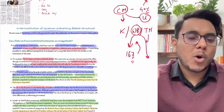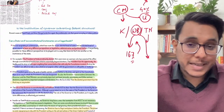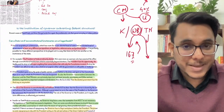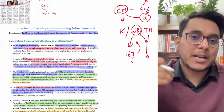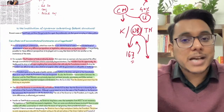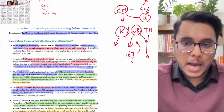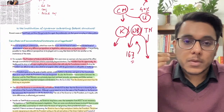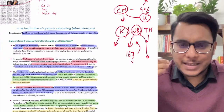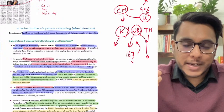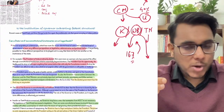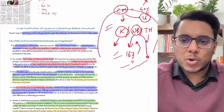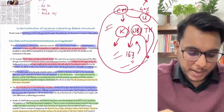In Kerala, there is a controversy over the Chancellor's role. The Governor is the Chancellor of state universities and can appoint Vice Chancellors. One Vice Chancellor was appointed in Kannur University, but then the Governor said the appointment happened because of political pressure. Such controversies are ongoing. Every controversy does not need to be followed individually.